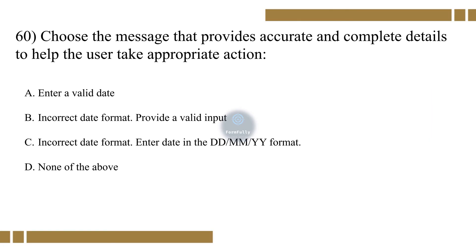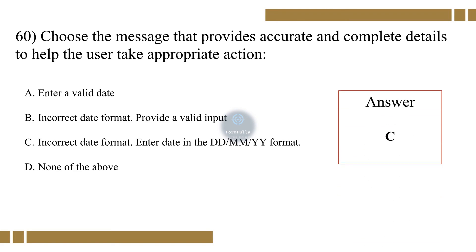Question 60. Choose the message that provides accurate and complete details to help the user take appropriate action. Option A: Enter a valid date. Option B: Incorrect date format. Provide a valid input. Option C: Incorrect date format. Enter date in DDMMYY format. Option D: None of the above. The correct option is C.